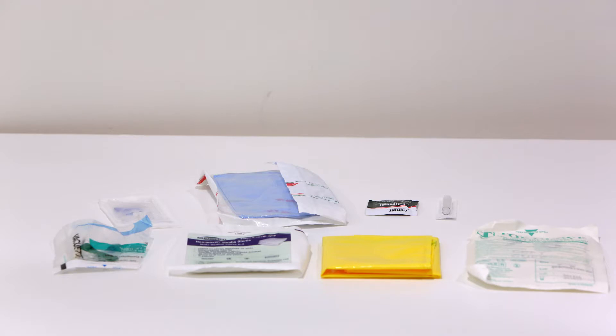The contents of the adult blood culture pack include a pair of sterile gloves size 7.5. If you use gloves of a different size you will need to obtain the right sized glove for you from the ward.